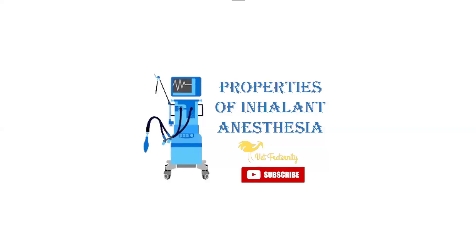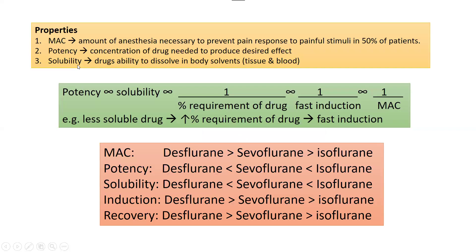In this video we are going to talk about some properties of inhalant anesthetics. The main properties are MAC — minimum alveolar concentration — the potency, and the solubility of these drugs.